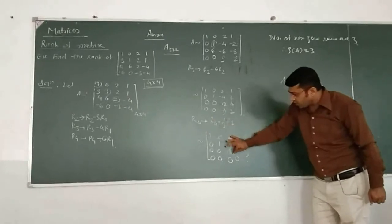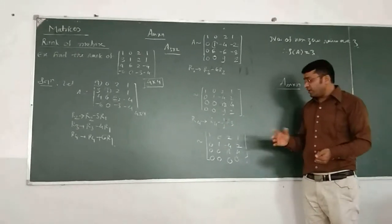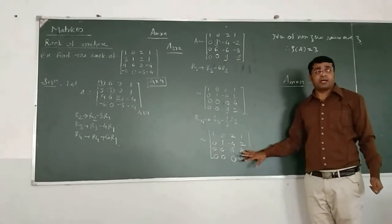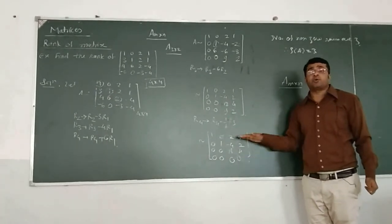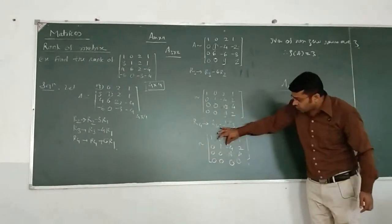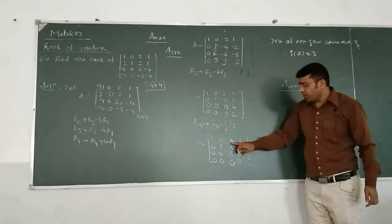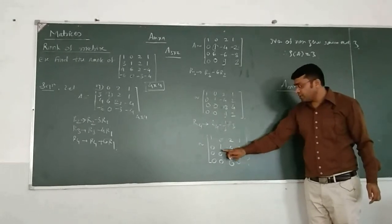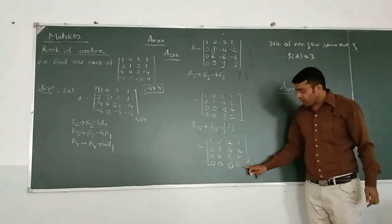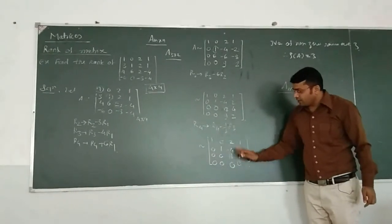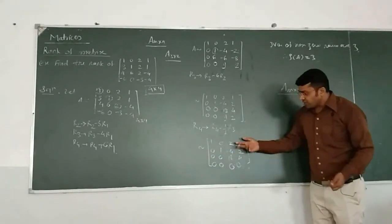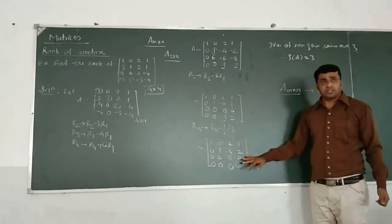Now, after getting the upper triangular, you have to check whether any row can become 0 row. Then you have to decide using the diagonal, make all the entries below the diagonal as 0. That is, we have to check how to make the other row as 0 row.